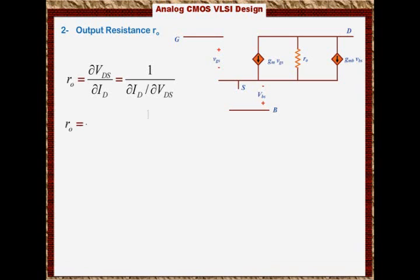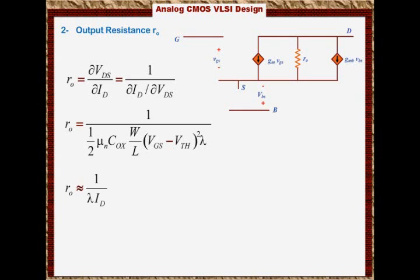Ro will equal 1 over [1/2 × μn × Cox × W/L × (Vgs - Vth)² × λ]. And we can approximate that to roughly equal 1/(λ × Id), because this component here is Id if lambda is neglected. So we can approximate it to be 1/(λ × Id).